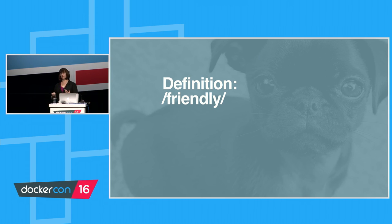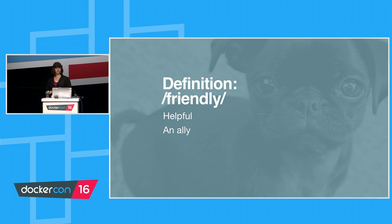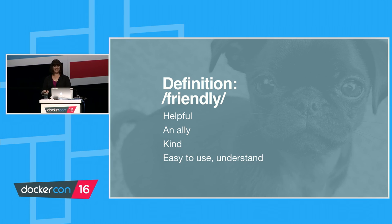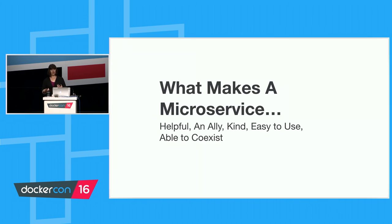Now, another word: friendly. Friendly microservices — that's what we're talking about today. It turns out, friendly is a word that has a lot of different meanings. It's a word that's evolved to mean many different things in the English language. The definition of friendly that we're going to use today is: helpful, an ally, kind, easy to use and understand, and lastly, able to coexist without causing harm.